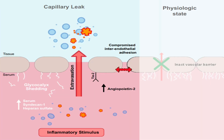This image illustrates the contrast between capillary leak during an inflammatory response and a physiologic state where the vascular barrier remains intact. In the physiologic state, shown on the right side of the image, the endothelial cells maintain strong inter-endothelial adhesion, preventing fluid from leaking into tissues. The glycocalyx remains intact, and TIE2 signaling is functional, helping to maintain endothelial stability and prevent excessive permeability.